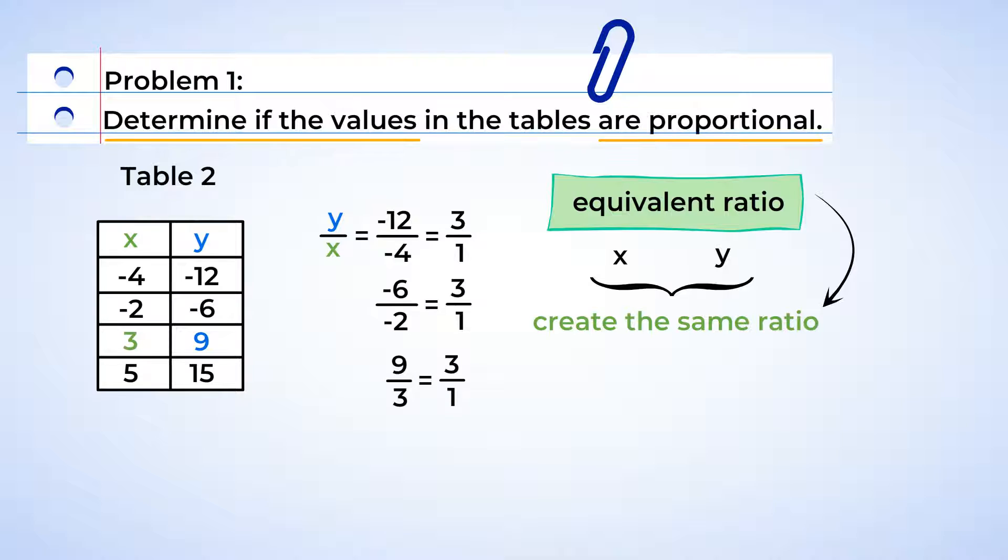We may have found our ratio. We need to make sure all of the values in the table have the same ratio. Last one, 15 over 5 is 3 over 1. Fantastic! The values in the table all have the same ratio, 3 over 1. This means that they are proportional.